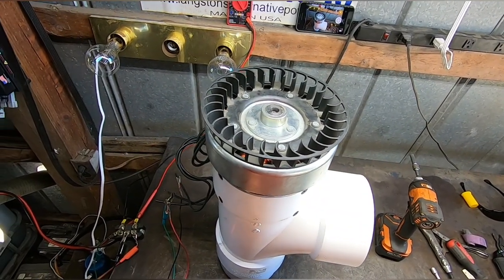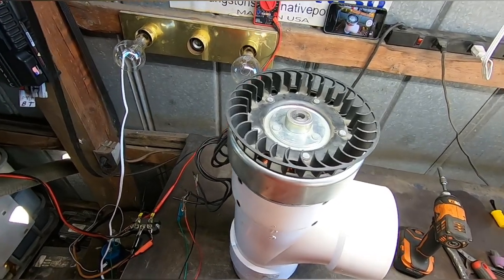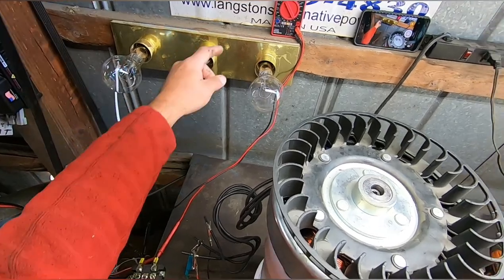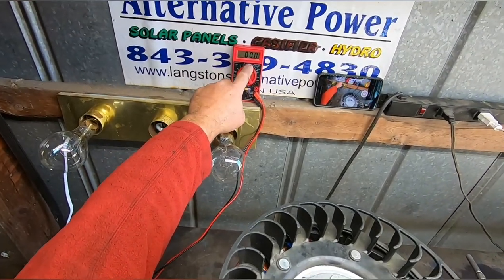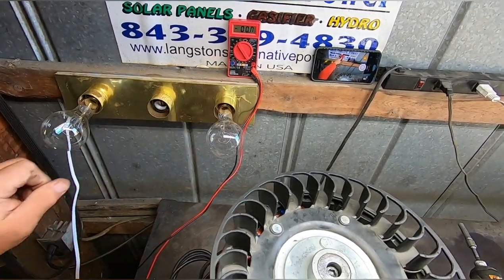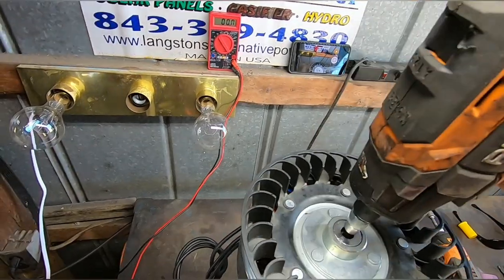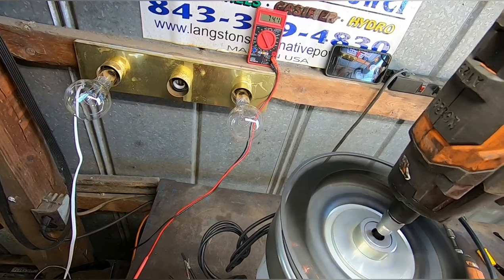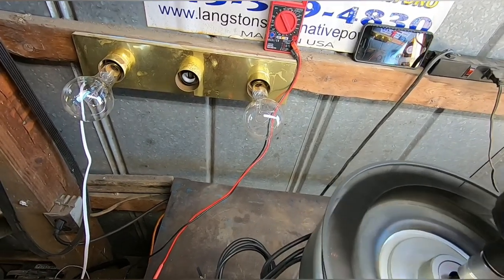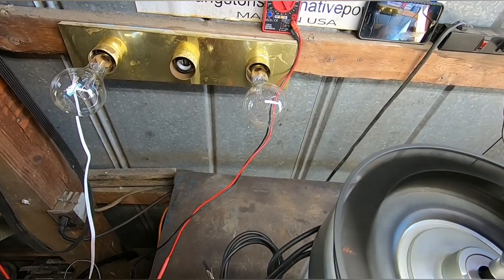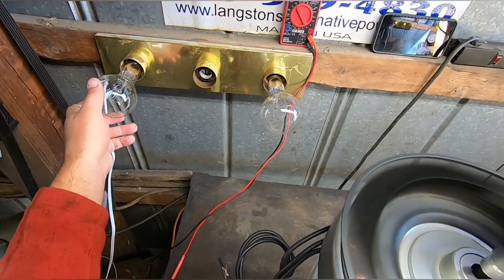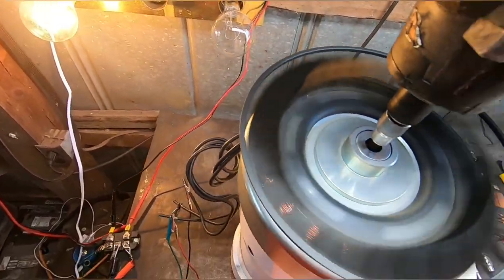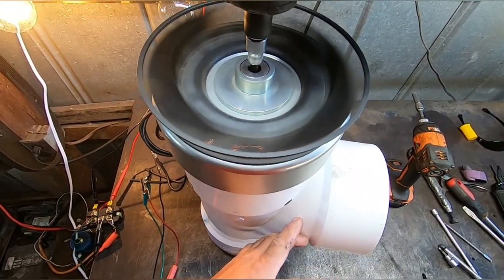Okay, now we're going to check and see if this thing's putting out any power. To start with we're going to do an open circuit voltage test. Let's see here, nothing. All right, we're gonna spin this baby up. At 120 volts. Let me check it. About 99 there. Looks like everything's working good.